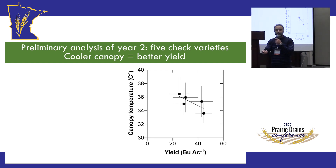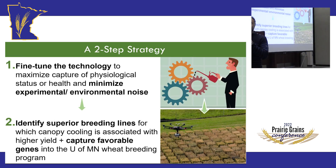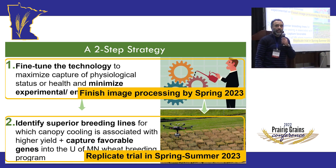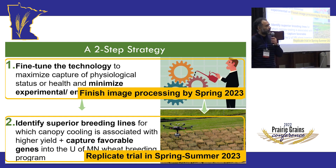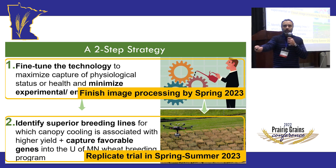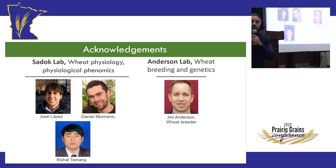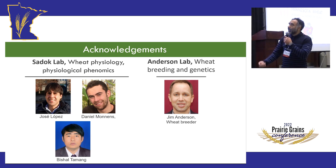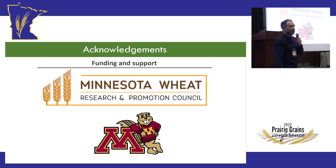What we want to do next is finish the data analysis of this year's trial and replicate the trial one more time next year. The goal is to have enough statistical resolution to hopefully find markers associated with canopy temperature and yield response to canopy temperature. This work would not have been possible without the team and a strong collaboration with Jim Anderson, the wheat breeder. Thank you for your support and the support from the University of Minnesota.